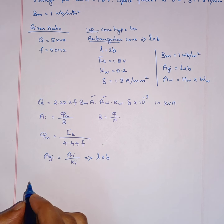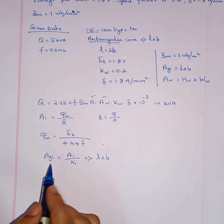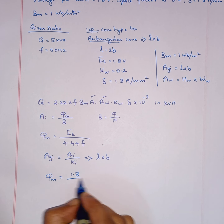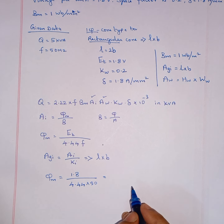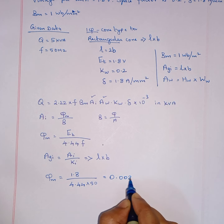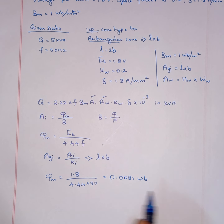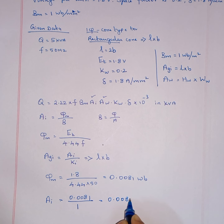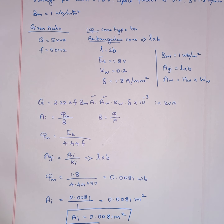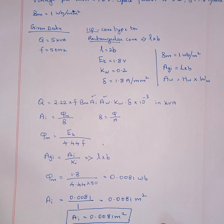We will substitute L into B here. First we find AI. For that we need phi M. So phi M is equal to ET divided by 4.44 F — ET is 1.8 divided by 4.44 into 50. Substituting this, we get 0.0081 Weber. Then AI is equal to phi M divided by BM. Substituting, BM value is 1, so we get AI equal to 0.0081 meter square. This is the net iron area.